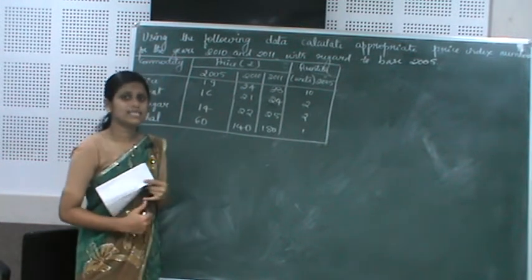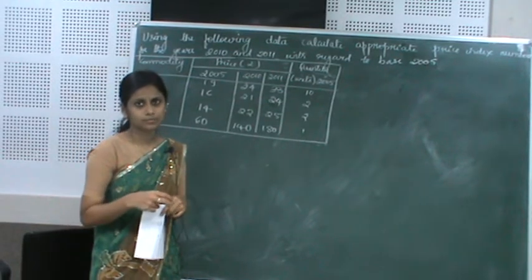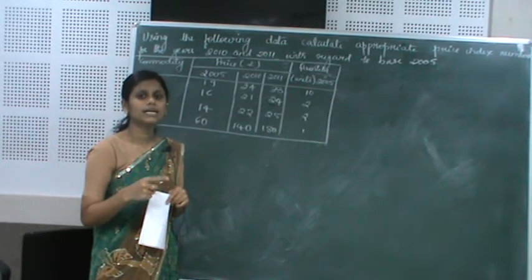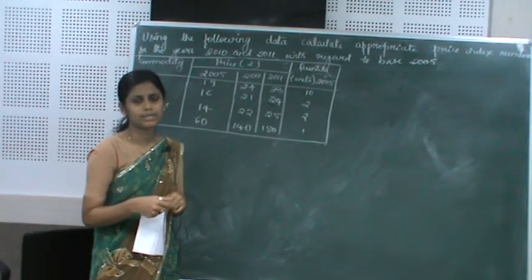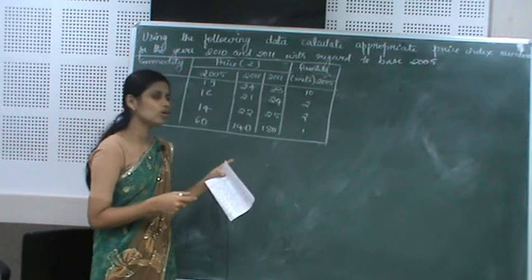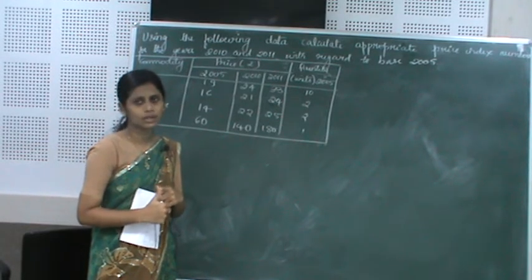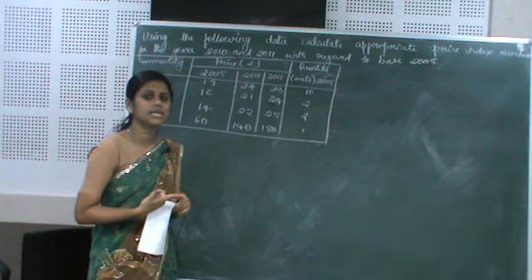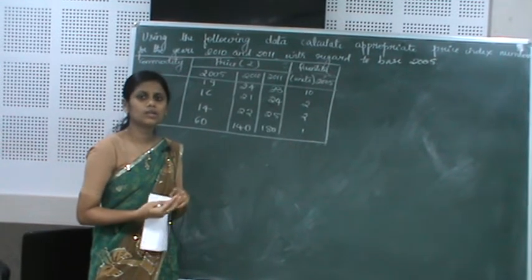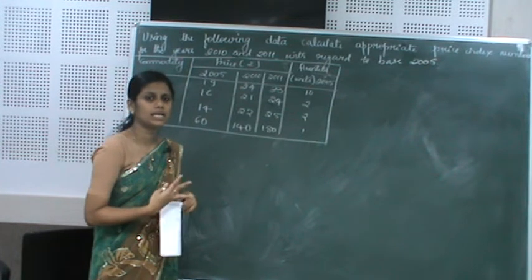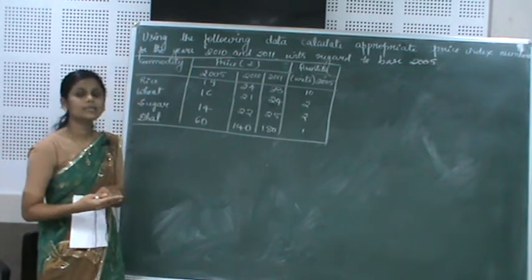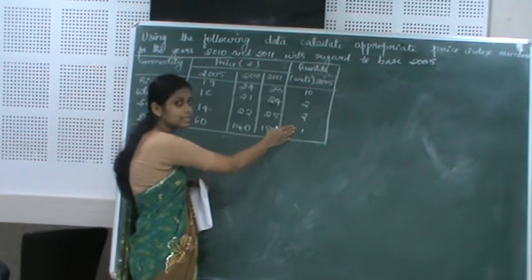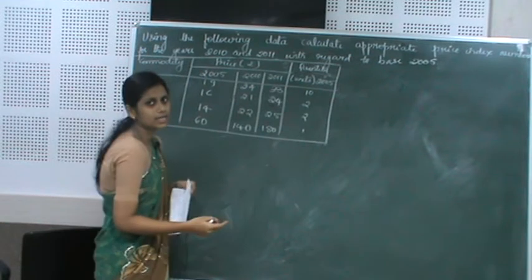Since base year quantity Q0 is given, we will use Laspeyre's price index number, because Laspeyre's formula uses the quantity of the base year as weight. In Paasche's price index number, current year quantity Q1 is considered as weight. Since only base year quantities are given here, Laspeyre's index numbers are computed.